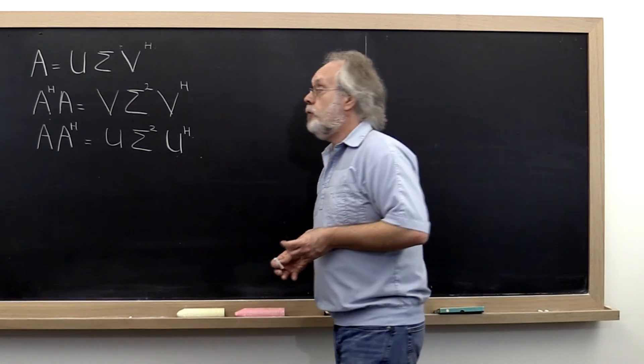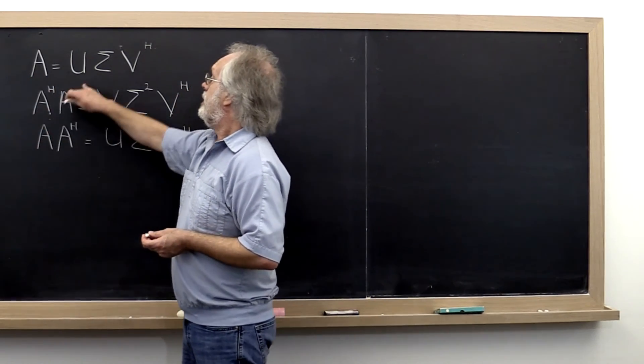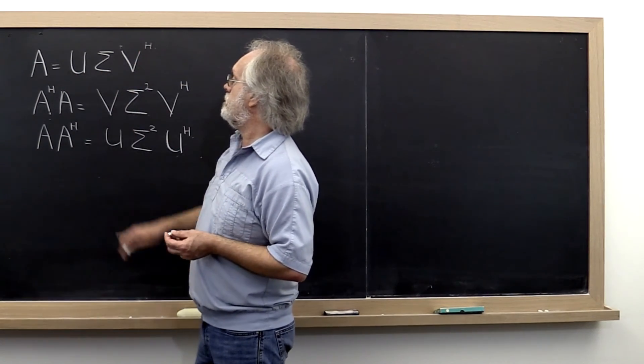So what did we learn in the opener? In the opener we said if A has the singular value decomposition U Sigma V^H,